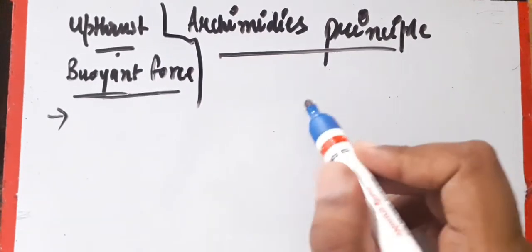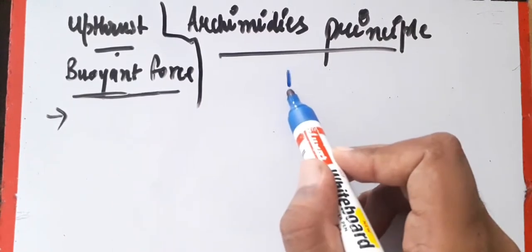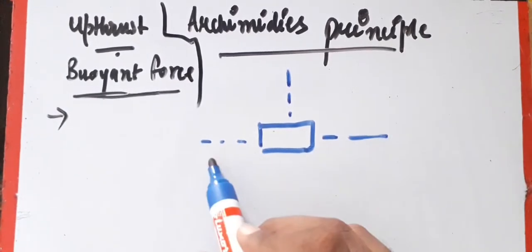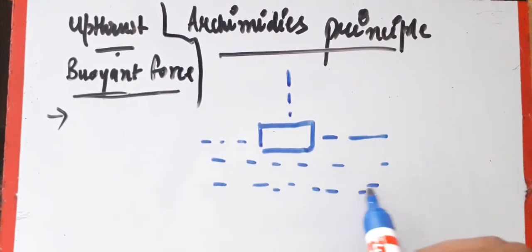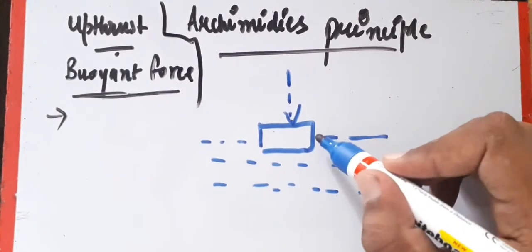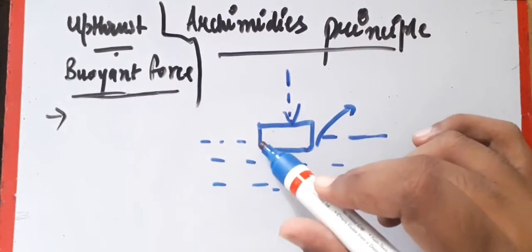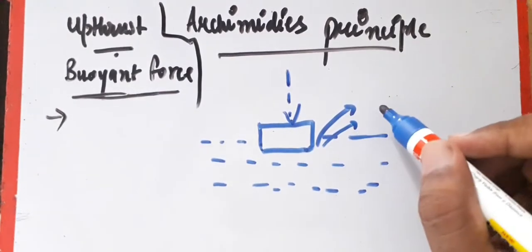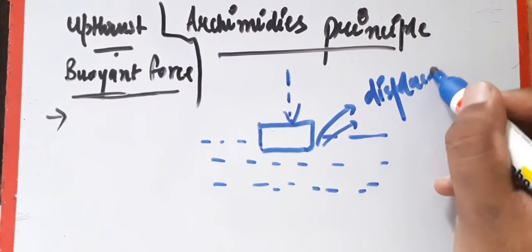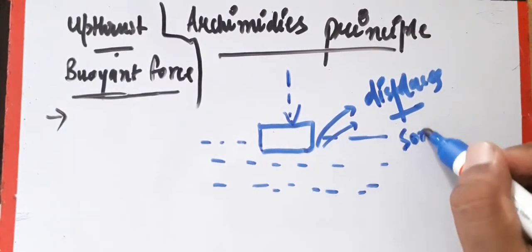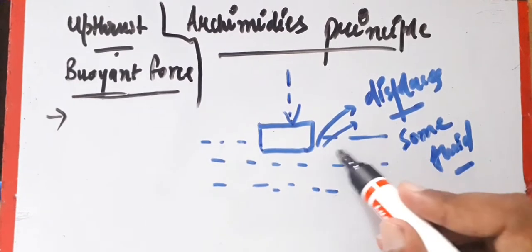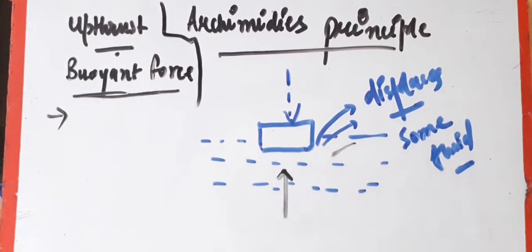So now, what is Archimedes principle? Archimedes principle states that when an object is dropped into water, it displaces some fluid. The fluid which is displaced is equal to the buoyant force acting on the object.